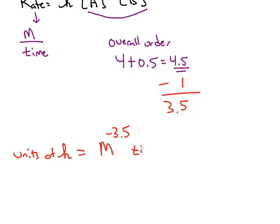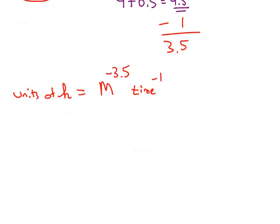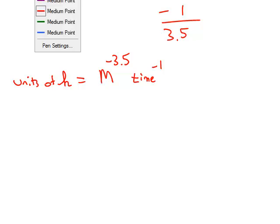And then whatever the time was measured in the rate, the time will always be to the negative 1 power. So this might be molarity to the negative 3.5, seconds to the negative 1, or minutes to the negative 1, or years to the negative 1.